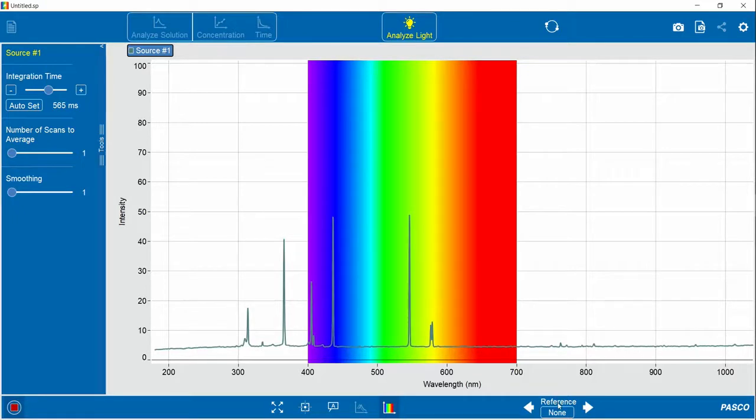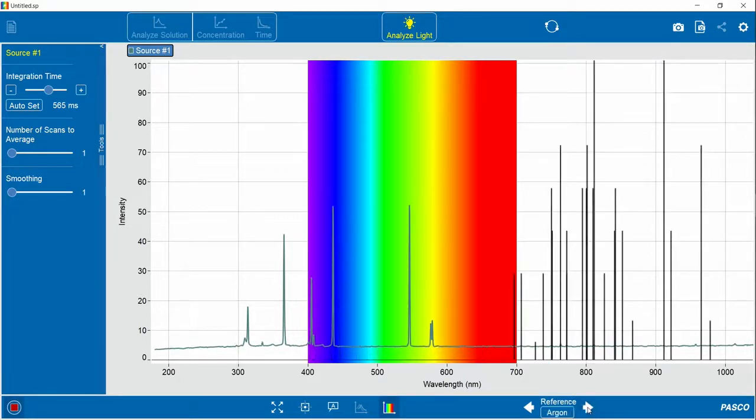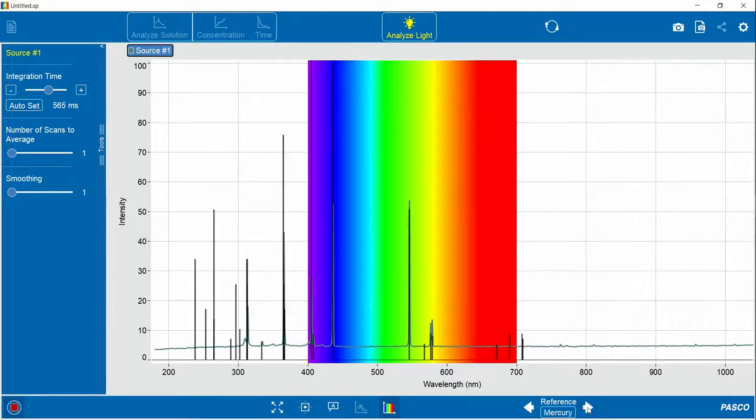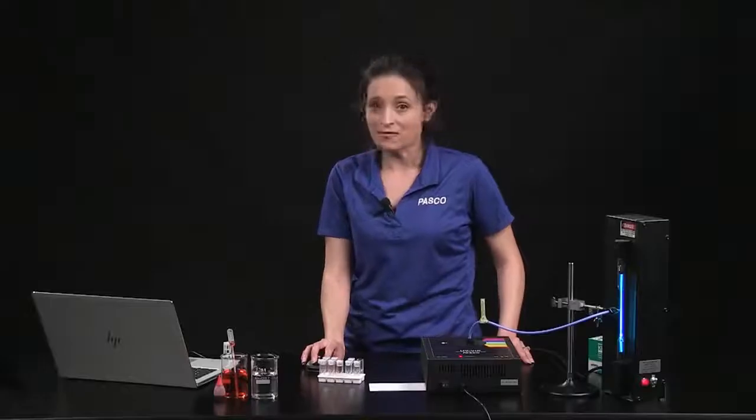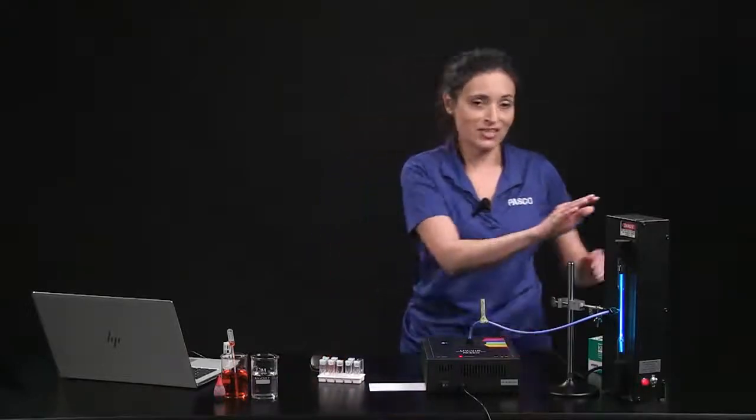And now I can run through the reference lines for known elements. Here's hydrogen, which does not match my data. The next one is helium, does not match. And argon does not match. Neither does xenon. But mercury does match. So these reference lines help you identify an unknown element from a gas discharge tube.